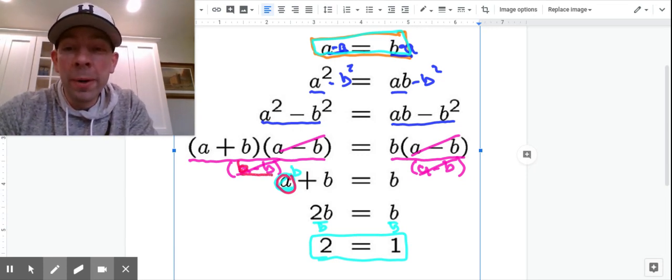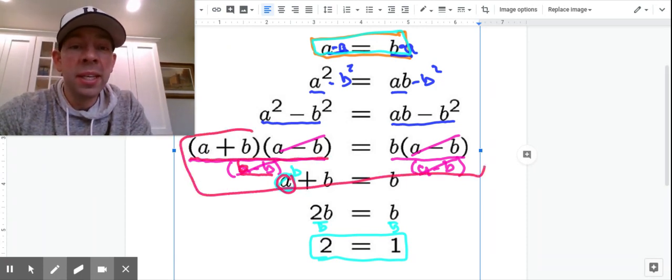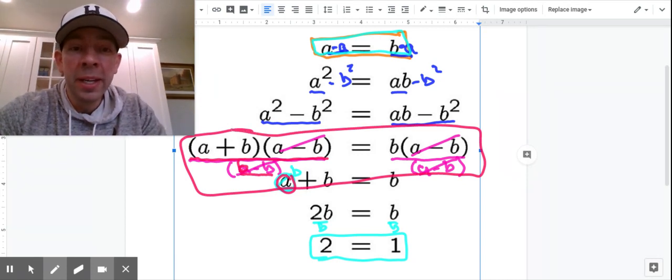And there's the problem. We are not allowed to divide by zero. So this right here was the illegal move that made this illegitimate proof.